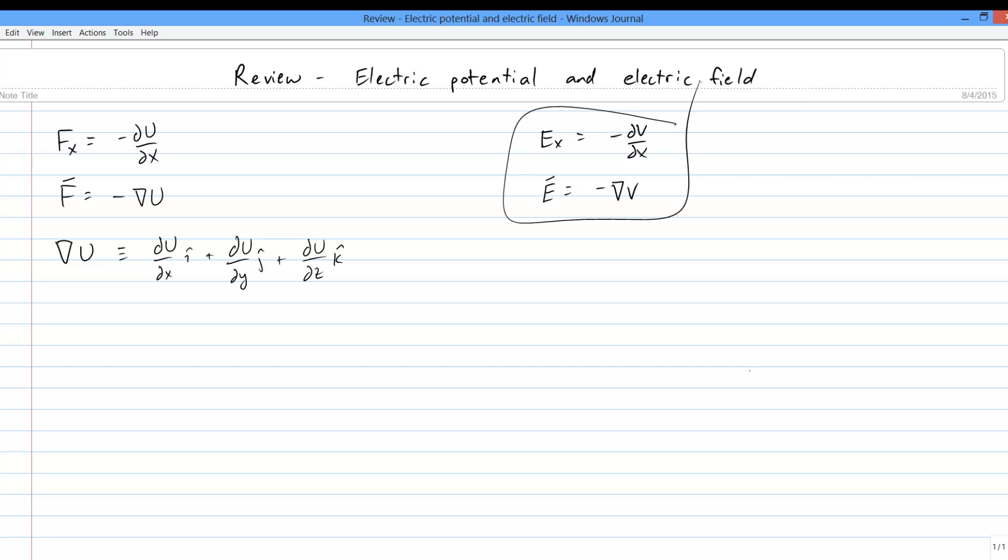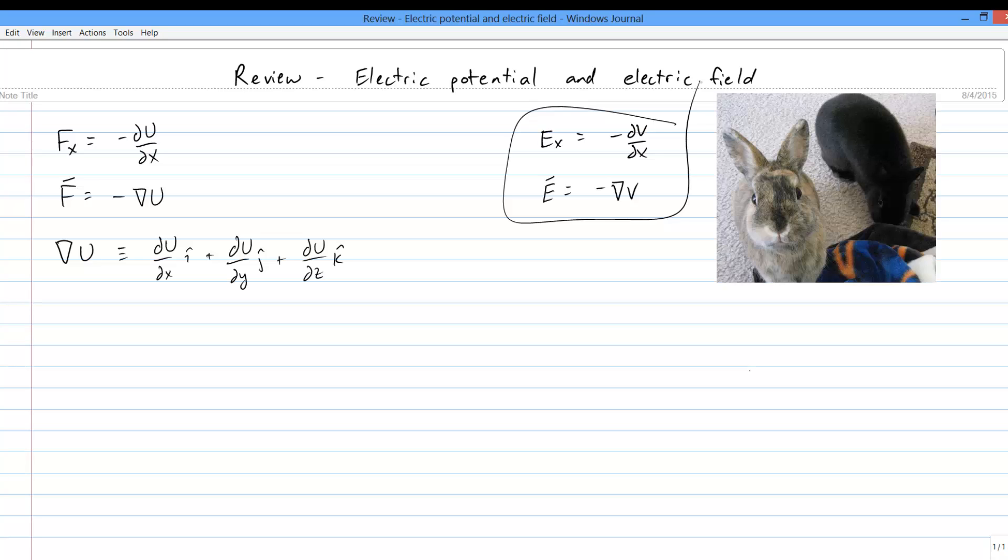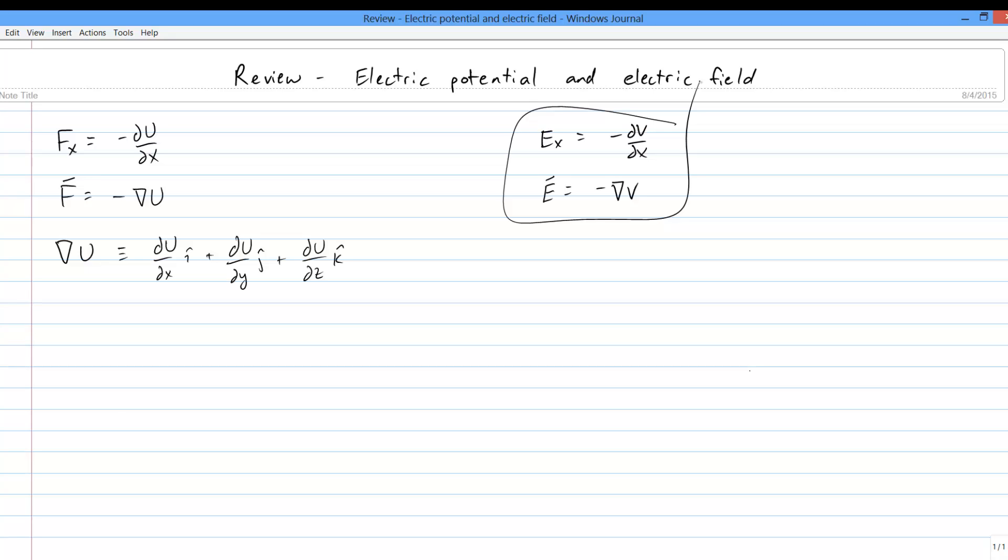This is the mathematical expression of the claim that electric field points downhill with respect to voltage. Fields point in the direction of steepest ascent, which is what the gradient tells you, and field components in particular directions come from taking particular derivatives.